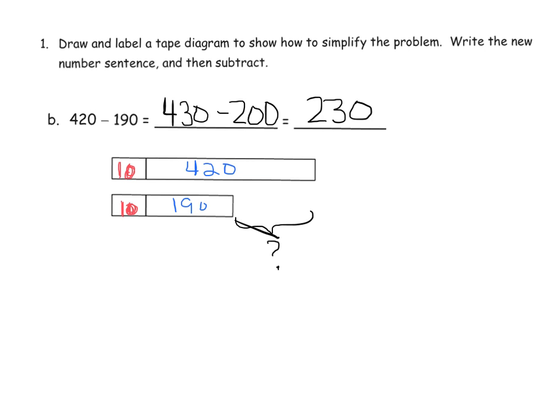And so that means this gap right here is 230. And it's a gap whether we're only looking at the 420 minus 190 there, and it's the same gap, 230, if we're looking at the entire tape diagrams, which is 430 minus 200. So what we're doing is we're using the associative property to bump up this number to a milestone number so that it's easier to subtract.